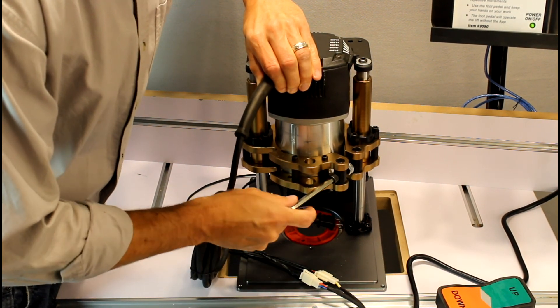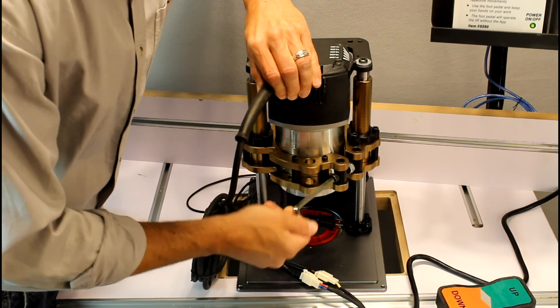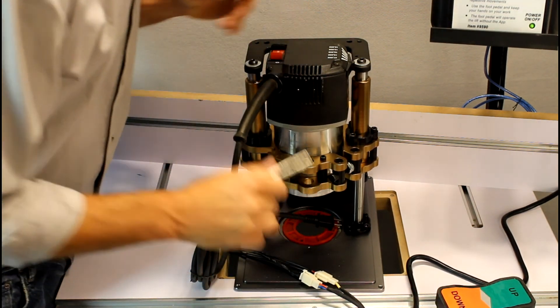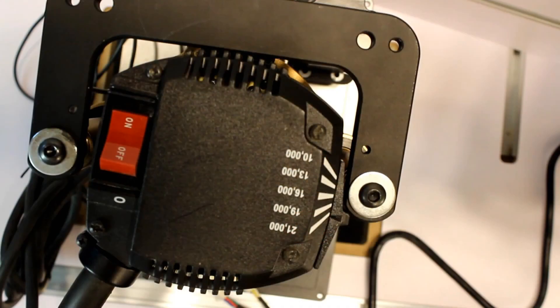Later on in the process we may have to make an adjustment to the position of the router in the lift. But for now tighten it all the way up. You should orient your router so that nothing comes in contact with the bottom of the lift. The power cable should be facing away from the lift and other items like switches need to clear completely.